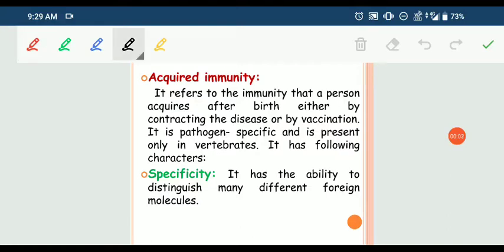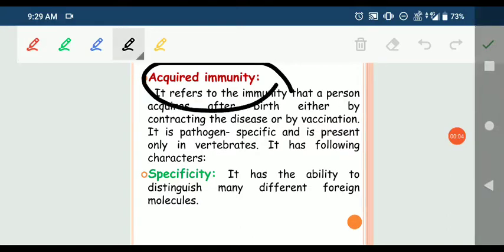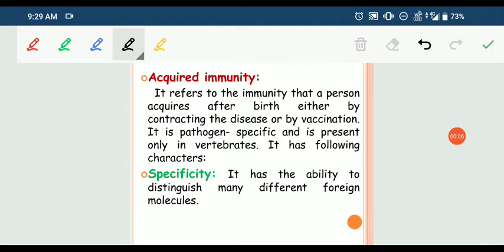Hello, today we will discuss acquired immunity. Acquired immunity is basically that kind of immunity which we can acquire or develop against a pathogen.